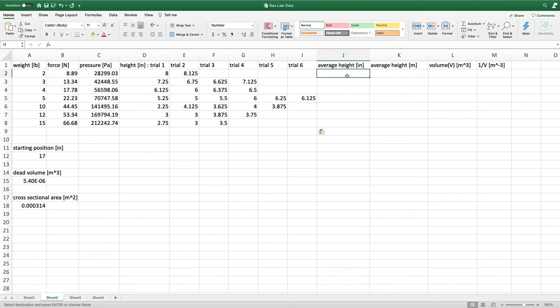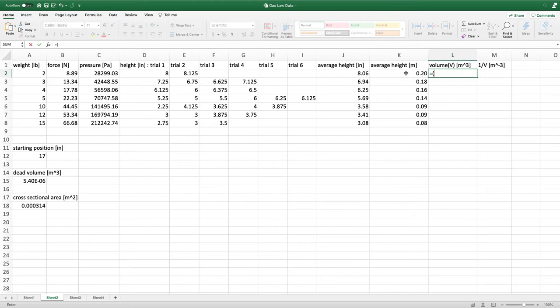If you did multiple trials for each weight like us, you'll also want to make a column averaging these trials. Then you want to convert those heights to meters. Next, make a column for the volume of air by multiplying the heights by the cross-sectional area, and don't forget to also add in the dead volume.